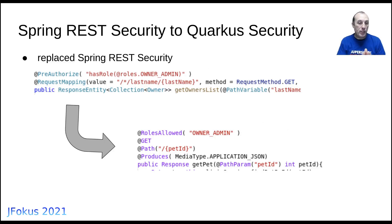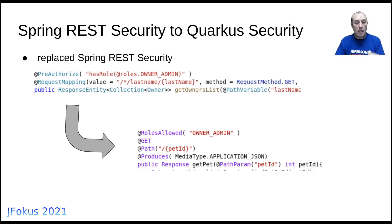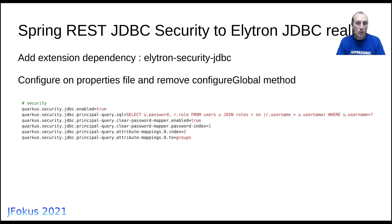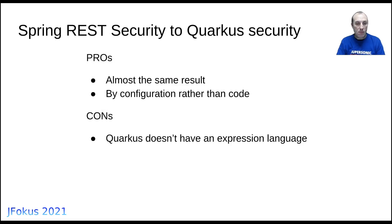Regarding Spring Security: Spring uses @PreAuthorize with an expression language to define which roles can access a method, while Quarkus only has @RolesAllowed, which accepts a list. That's a difference, but in this specific project it wasn't a problem. The security was persisted in a database, and Quarkus handles this transparently using Elytron Security JDBC — just configure the behavior via properties and that's it. The only drawback is the lack of expression language for roles.